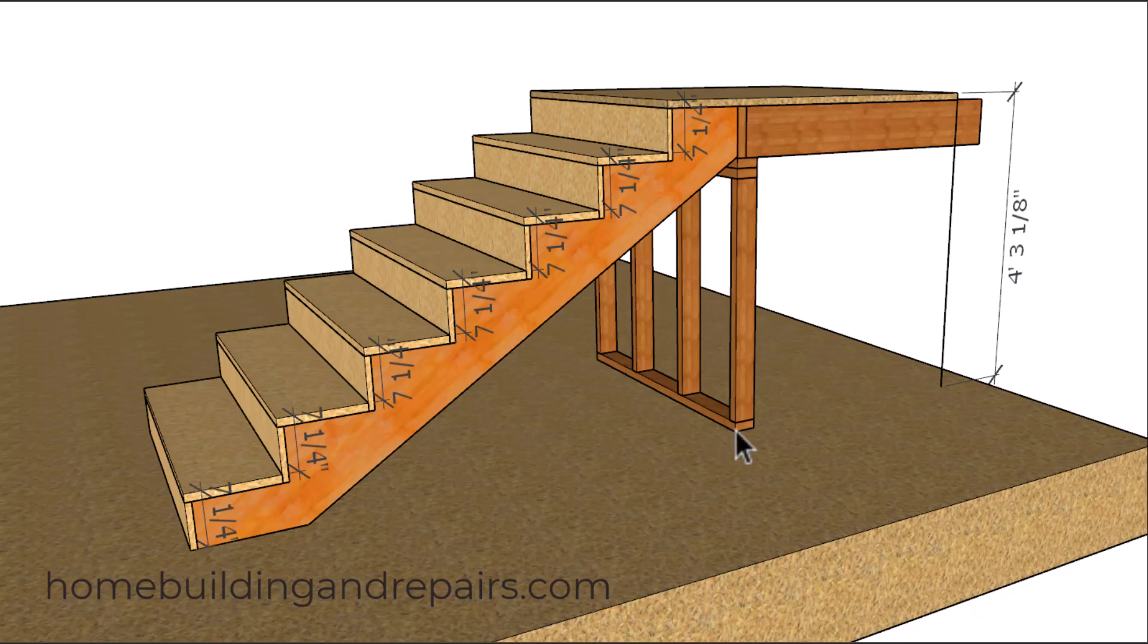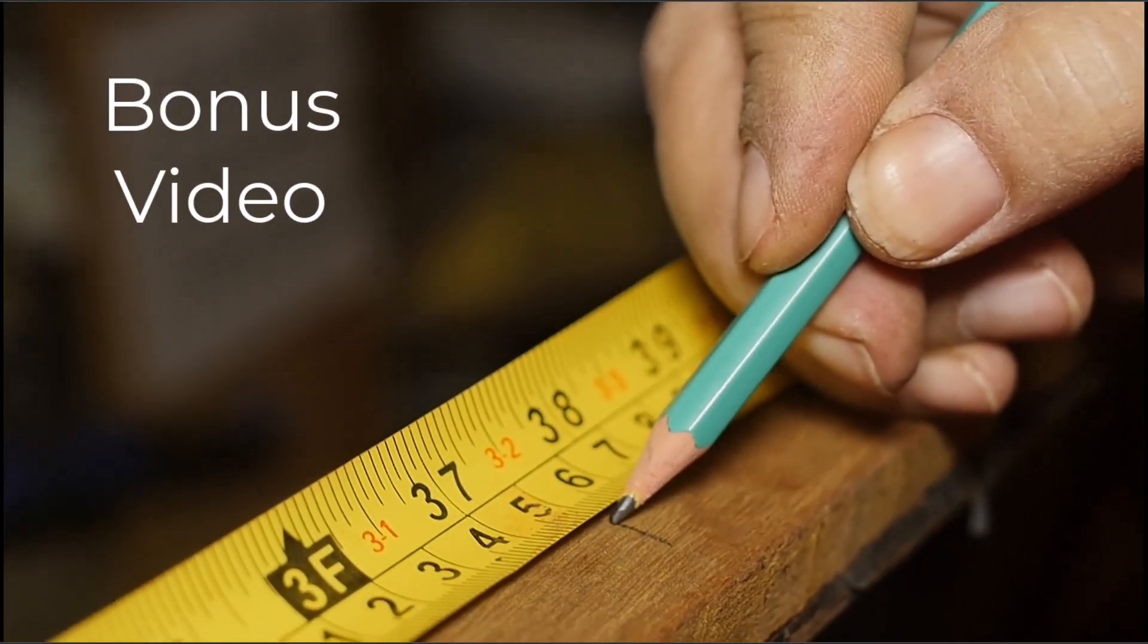Keep in mind the overall total rise is going to be the measurement between floors. And in some cases that measurement will need to be adjusted so that it is between finished floors. The finished material on the lower floor and the finished material on the upper floor. And hopefully that makes sense.